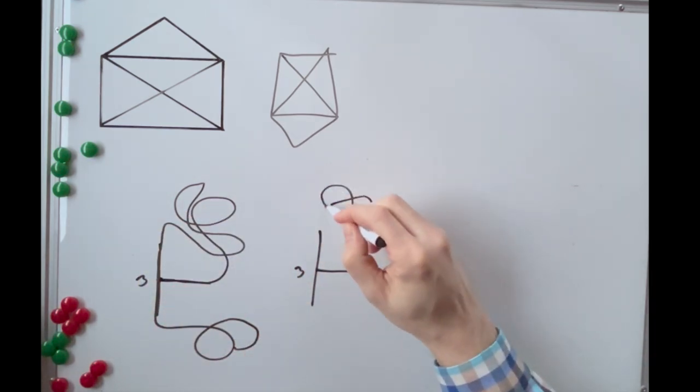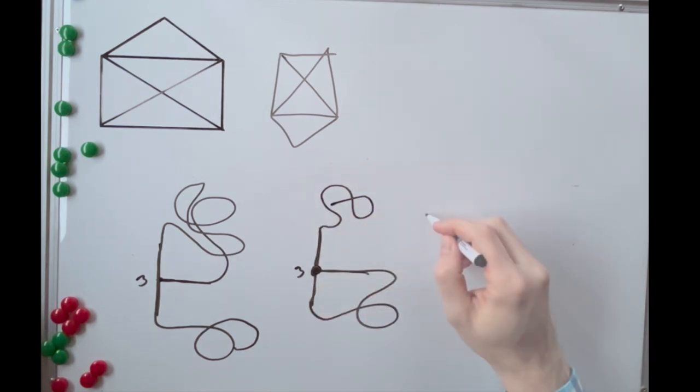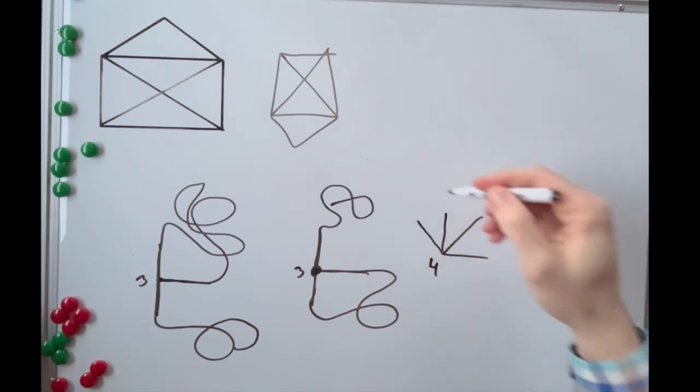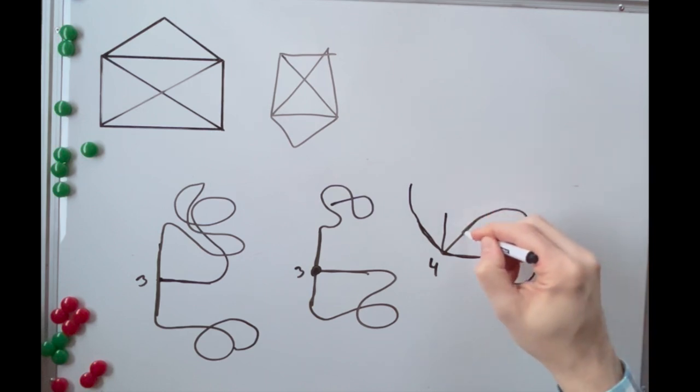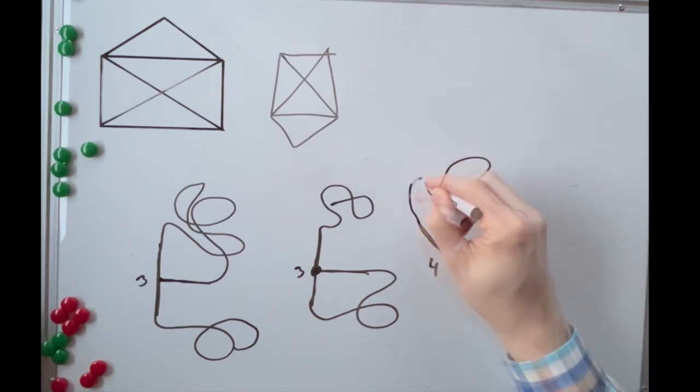Or you must end in that node and we cannot continue with drawing. The same goes for nodes with five or seven lines. But if a node has an even number of lines, you can enter it at any time, draw all its lines and leave without affecting the overall possibility of drawing the shape.